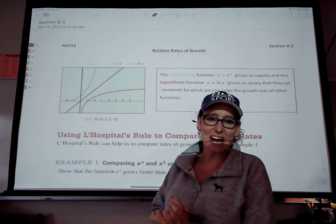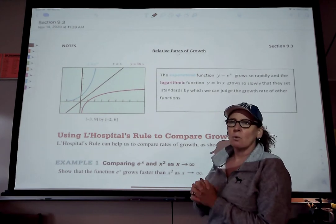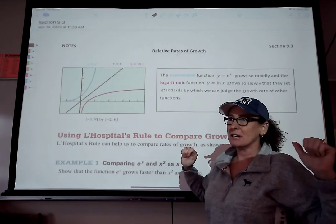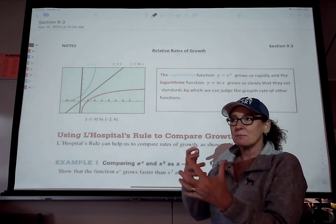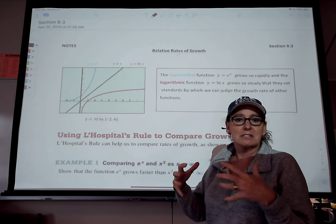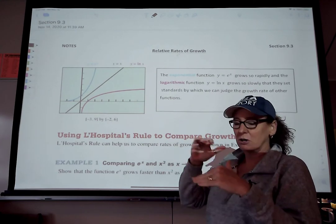Hey guys, these are your notes for section 9.3. We're going to look at relative rates of growth. We're not really, well, we are finding answers to limits, but we're really just doing limits in order to see how we're going to compare two functions. How fast does this one grow versus how fast does this one grow? Which one grows the fastest?